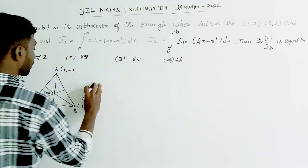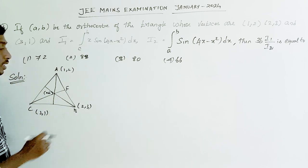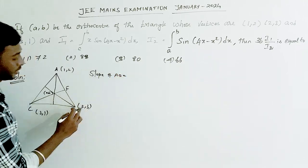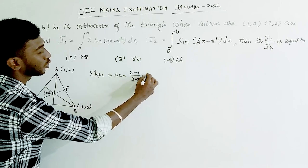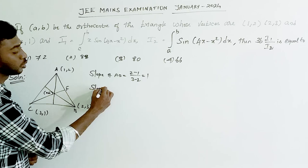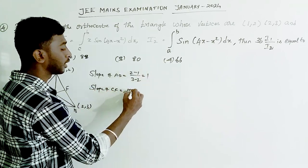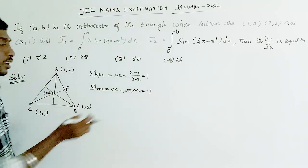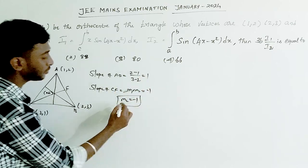The slope of AB: using points A(1,2) and B(2,3), slope = (2-1)/(3-2) = 1. Since CF is perpendicular to AB, using the condition M1 × M2 = -1, the slope of CF equals -1.